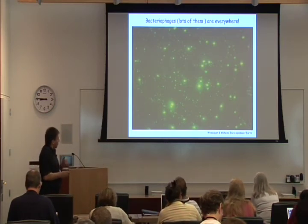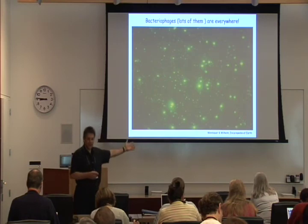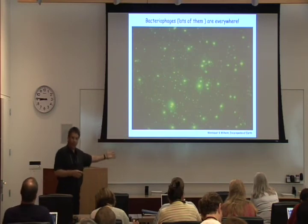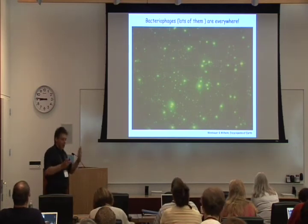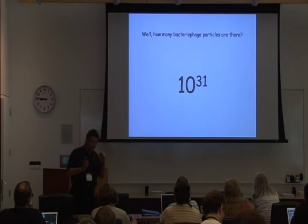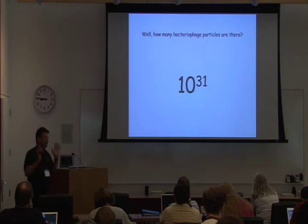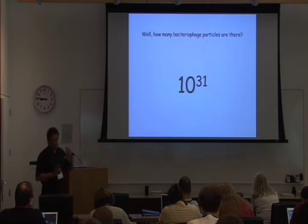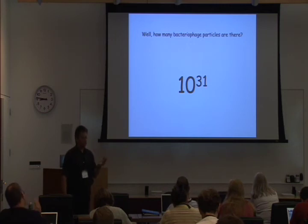When this became apparent, it was straightforward for people to do the calculation: if you've got 10^6 to 10^7 viral particles per milliliter, you can figure out how many milliliters there are, throw in fetch factors for terrestrial concentrations, and what you end up with is the astonishing number that there are 10^31 viral particles — predominantly bacteriophages — in the biosphere. This is remarkable. First of all, it's a very big, unimaginably big number.